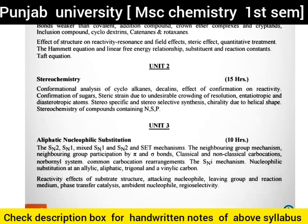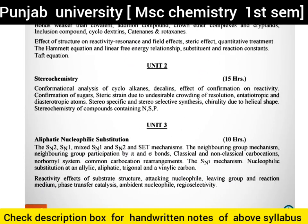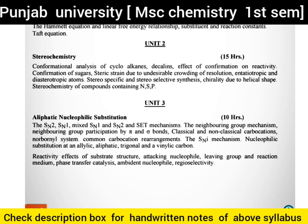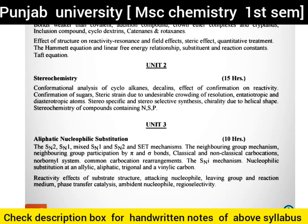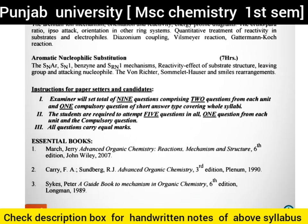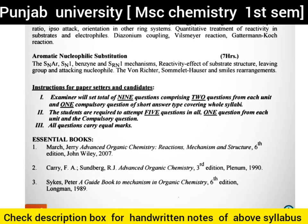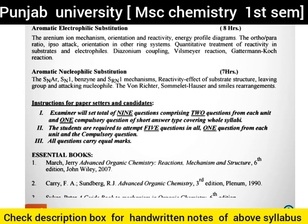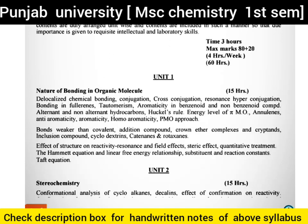Organic chemistry — the first unit is important. Topics include: Hammett equation, crown ethers, cryptands, inclusion compounds, annulenes, azulenes. After that, uranium iron mechanism, diazonium coupling, and Reimer-Tiemann reaction — naming reactions are important.